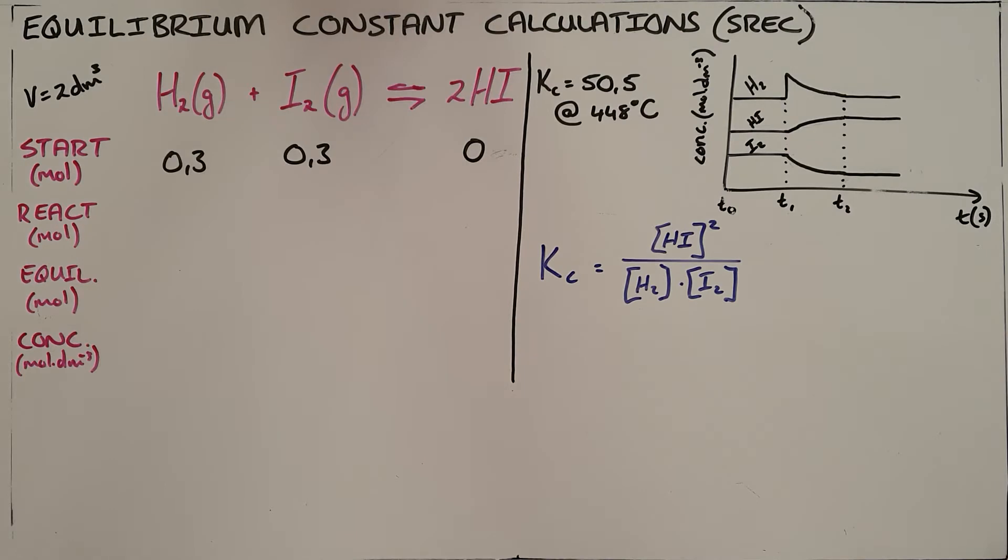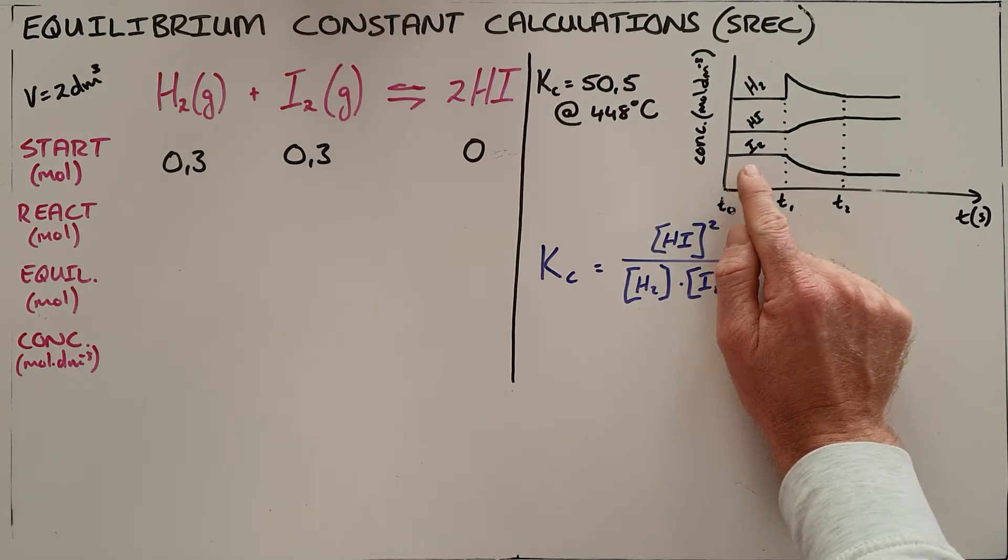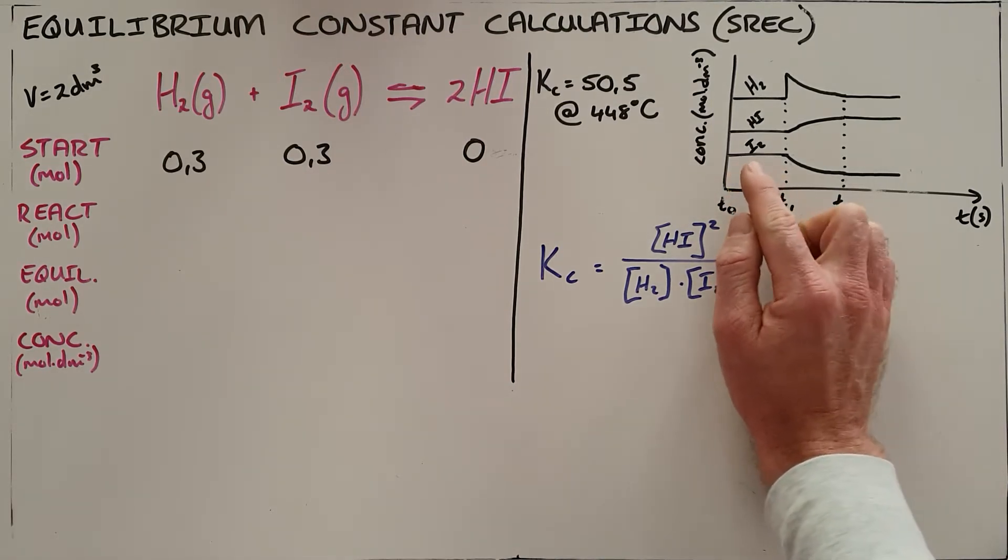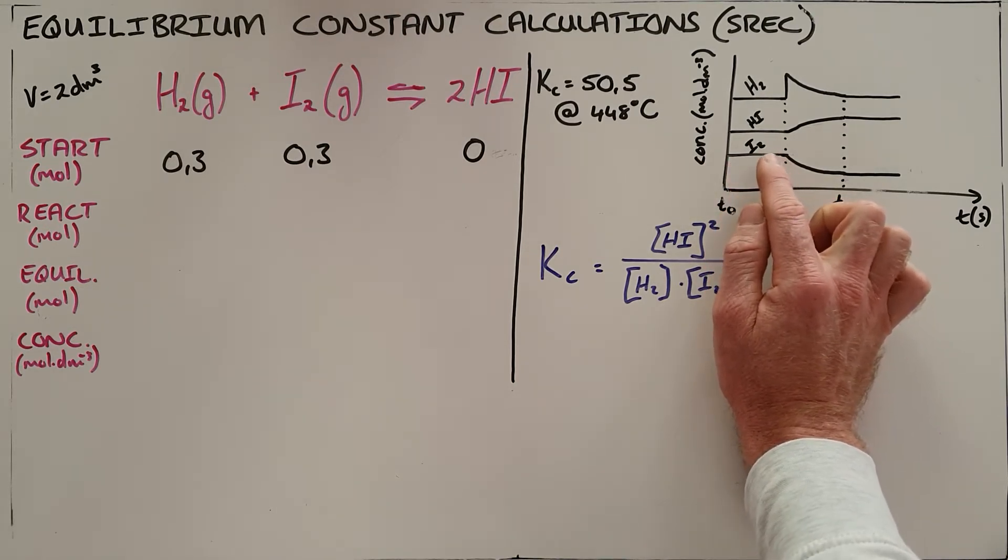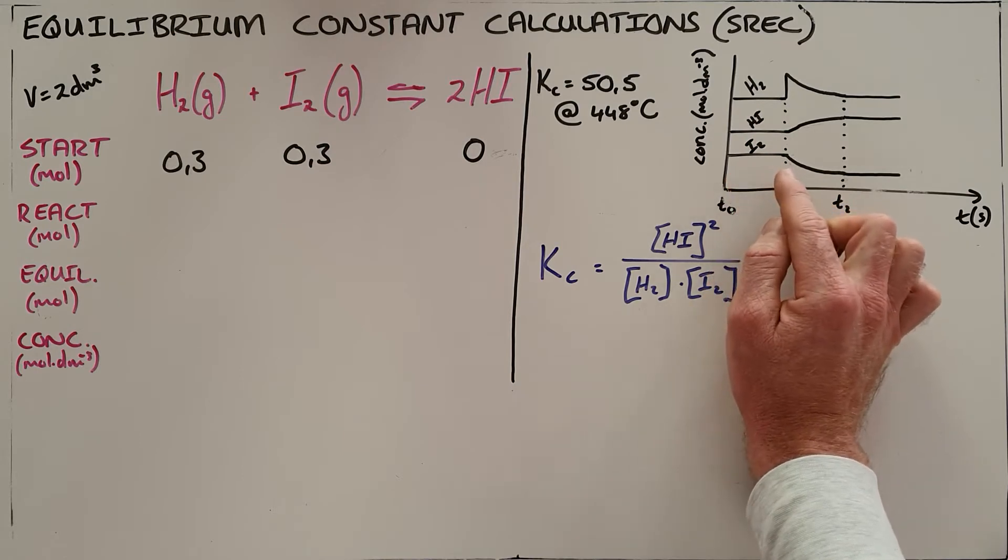The graph illustrates changes made to the equilibrium mixture. We can see at T0, equilibrium is established because the concentrations of all species present remain constant from T0 to T1.